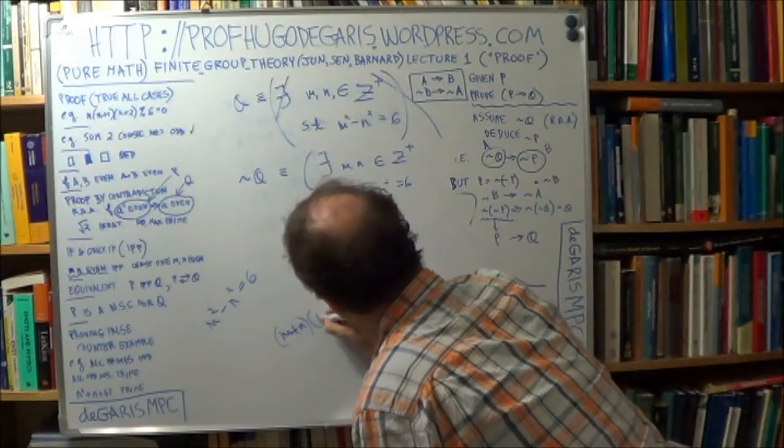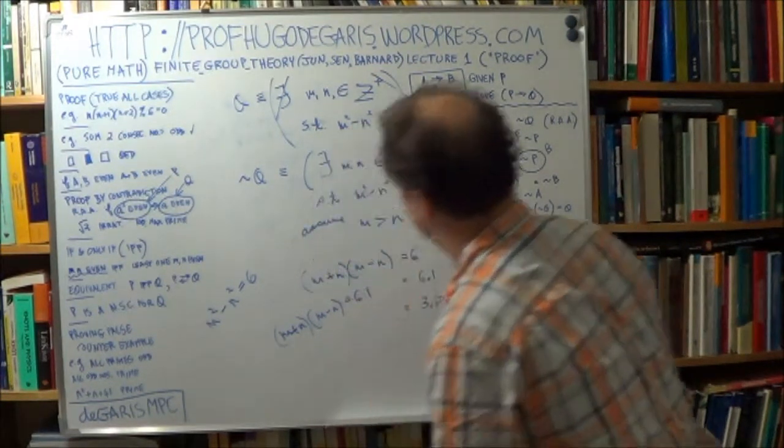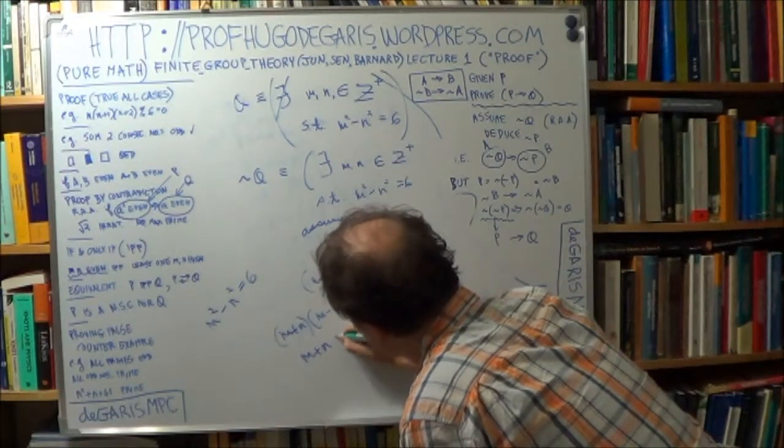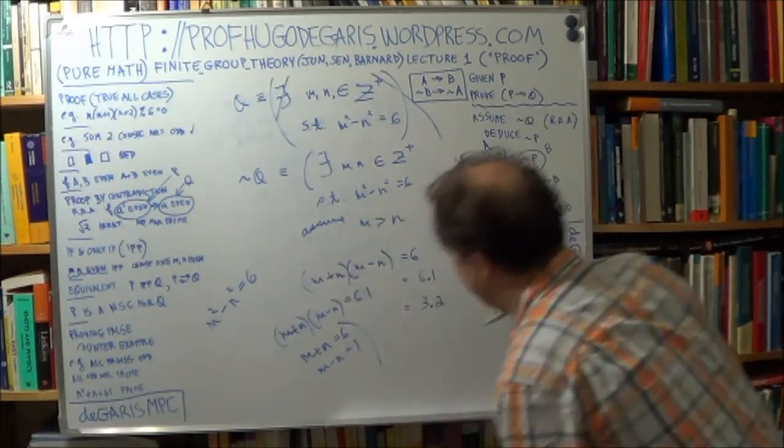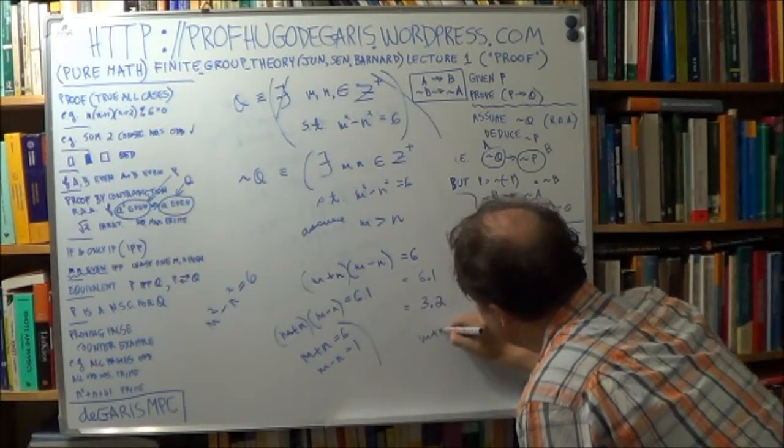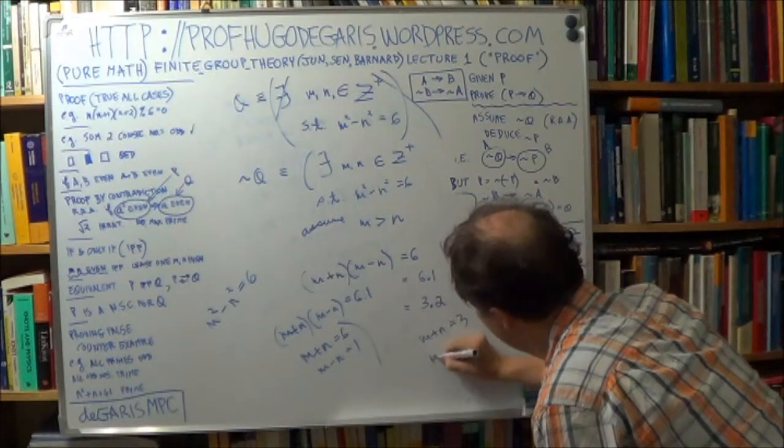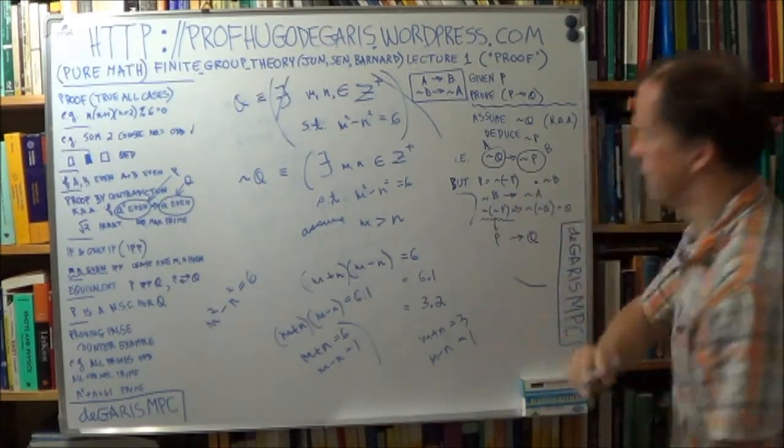So if m plus n, m minus n equals 6 by 1, therefore m plus n is 6 and m minus n is 1, that's one possibility. Or, m plus n is 3 and m minus n is 2.